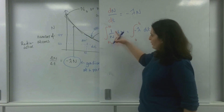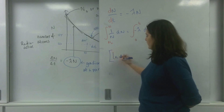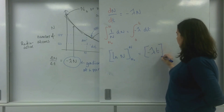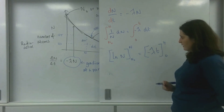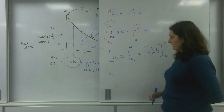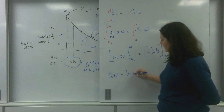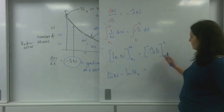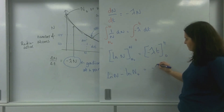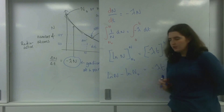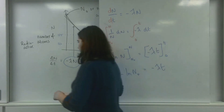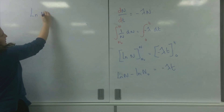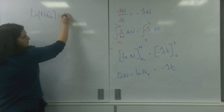Integrating, I end up with 1 over N integrated giving ln N, evaluated between N and N naught, equals minus lambda t evaluated between t and 0. I now input my values: I have ln N take away ln N naught. That's how you deal with definite integrals — you put one value in and then take away the other. Putting t in and 0 in, I'll use log laws to simplify this into one logarithm, giving ln of N divided by N naught equals minus lambda t.